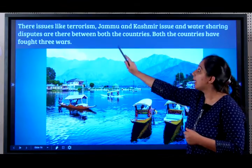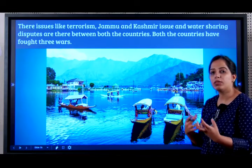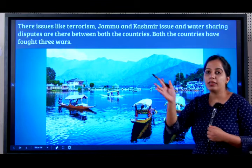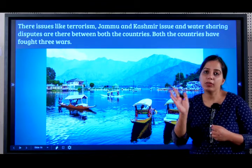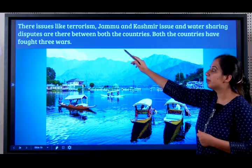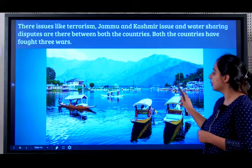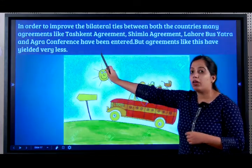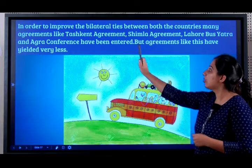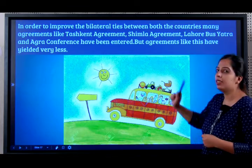There are issues like terrorism and the Jammu and Kashmir issue — there is a conflict as to which country the state belongs to — and water sharing disputes. The Indus river flows from India into Pakistan, creating a dispute over sharing of river water. There have been three wars between India and Pakistan since independence. In order to improve bilateral ties, many agreements like the Tashkent Agreement, Shimla Agreement, Lahore Basyatra, and Agra Conference have been entered into.